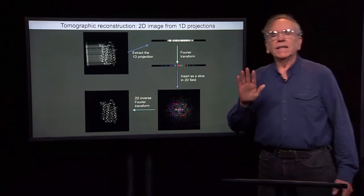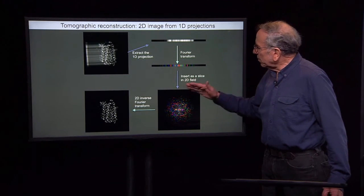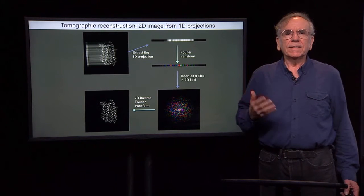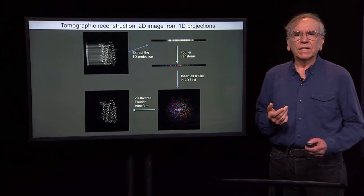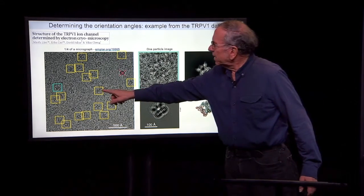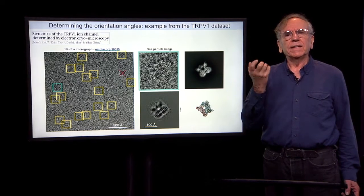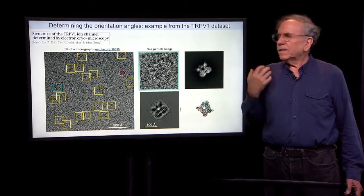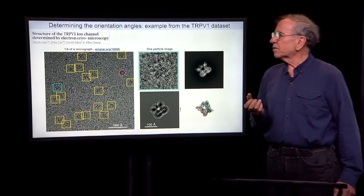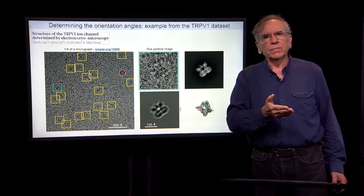We can do this in three dimensions as well. In that case, the projection is a two-dimensional image — a two-dimensional Fourier transform — and we insert slices into a 3D Fourier volume. If we insert a complete set of slices, we can get a three-dimensional reconstruction. The problem in cryo-EM is that the three-dimensional objects are oriented randomly in the ice, and we don't know what those orientations are. This is a very fundamental problem: how do we know the orientation so that we know at what angle to insert a slice into the 3D Fourier transform?